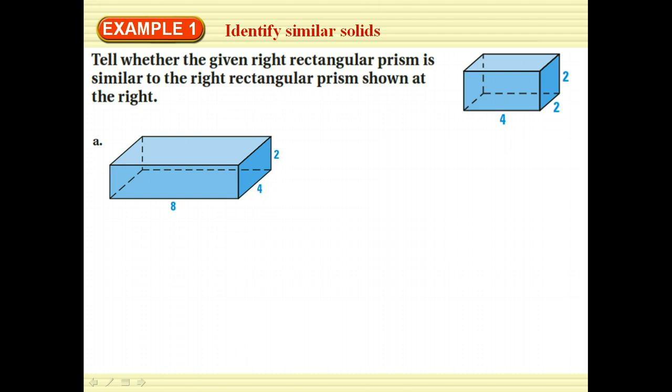Tell whether the given right rectangular prism is similar to the right rectangular prism shown on the right. The lengths are four to eight from the smaller one to the bigger one, which is one half. The width is two to four, which is also one half, but the height is two to two, which is one to one. So no, these two are not similar.